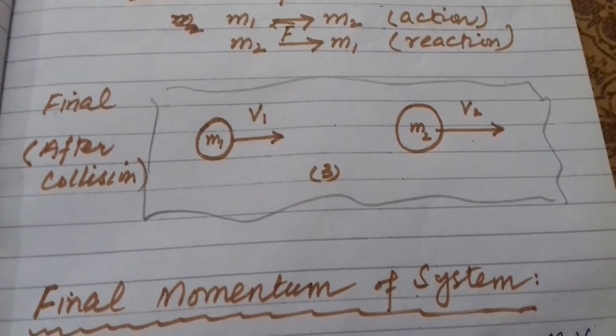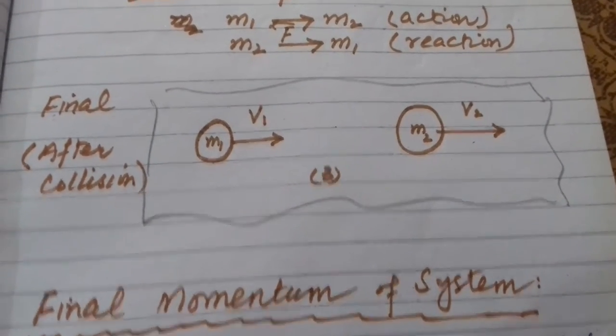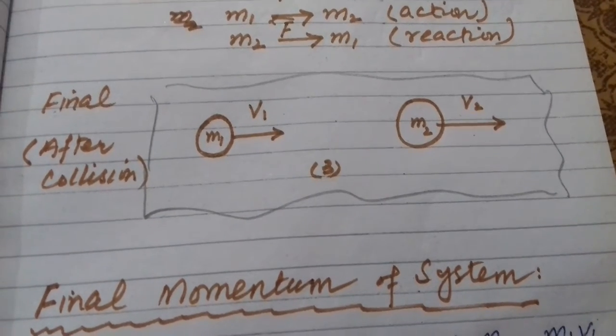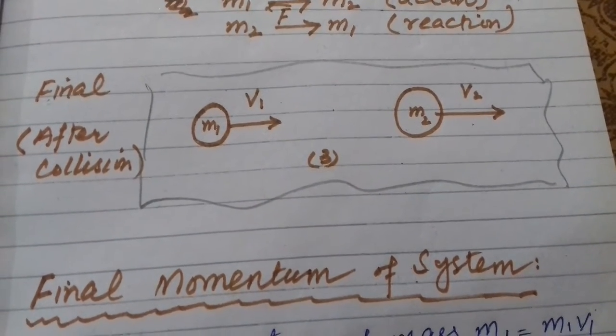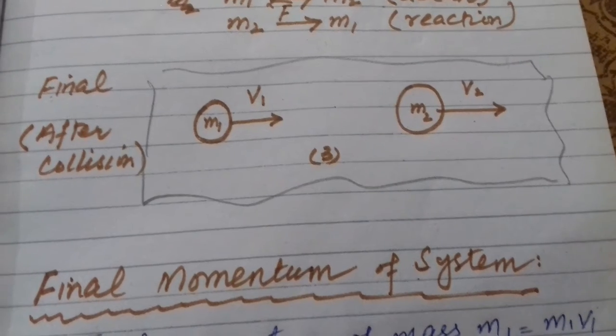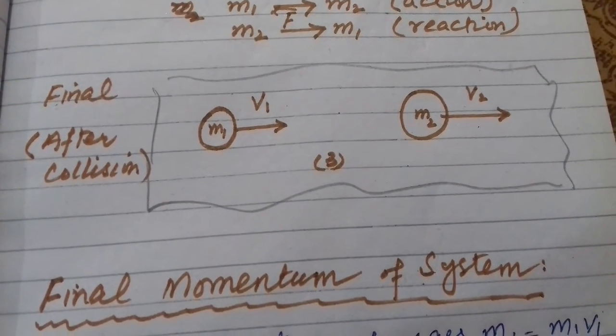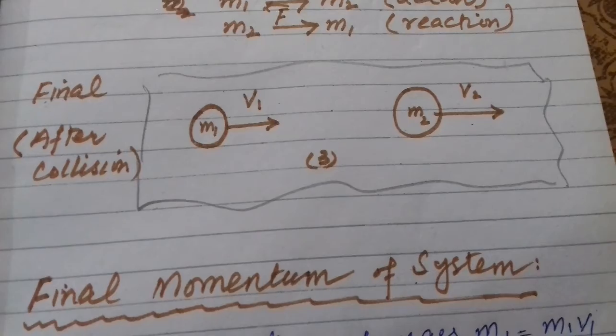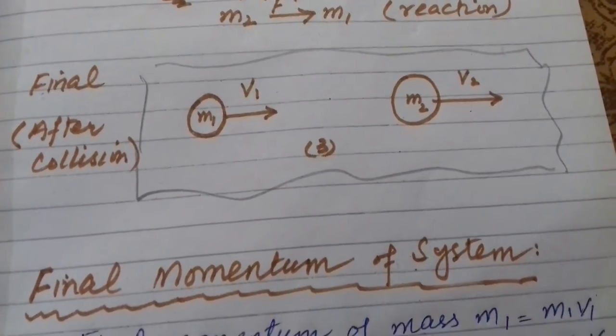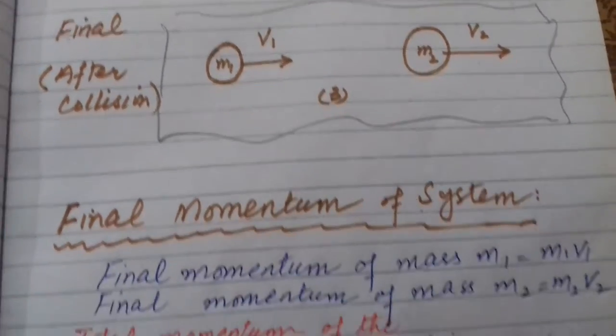After some time they will separate from each other. Now their velocities will change. What would be the velocity V1 and V2? The velocity of mass M1 after collision is V1, and the velocity of mass M2 after collision is V2. Now we will calculate the final momentum of the system.